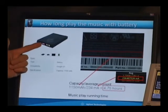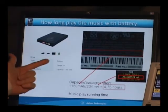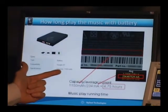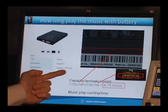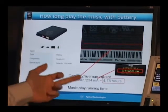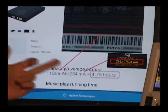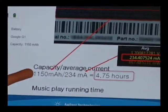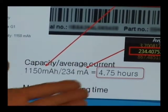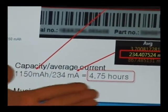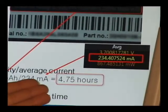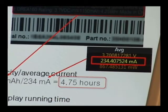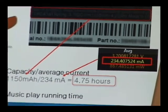The battery data sheet says that the capacity is 1150 milliamp hours. In the simple formula, capacity divided average current means hour. That means over 4.75 hours. The capacity came from the data sheet battery.